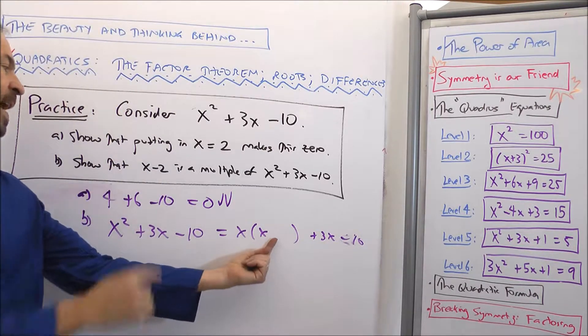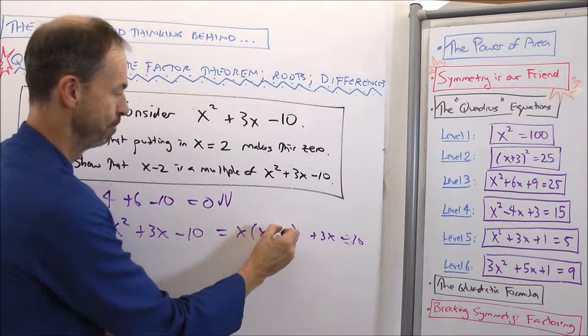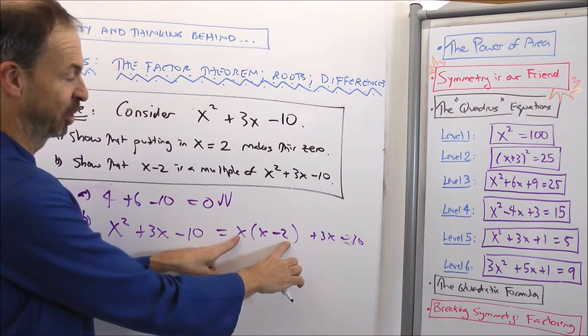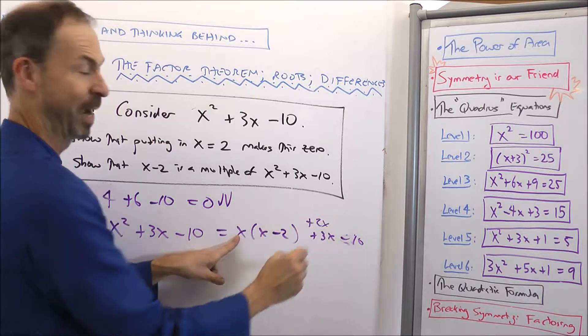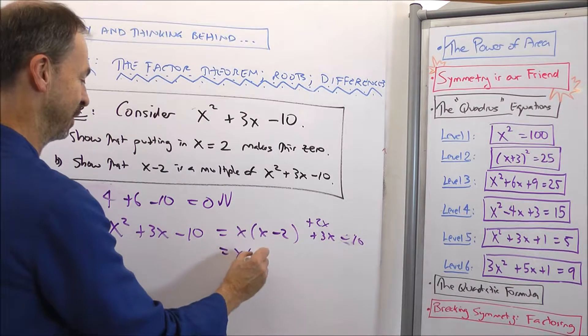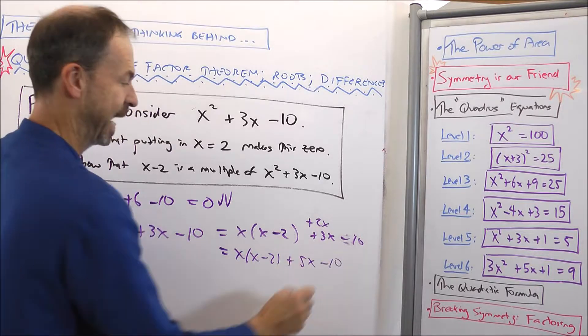But I want a multiple of x minus 2. Minus 2, oops, I've just been off by minus 2x, counteract with a positive 2x. So this is really x times (x minus 2) plus 5x minus 10.